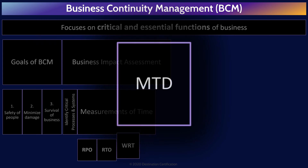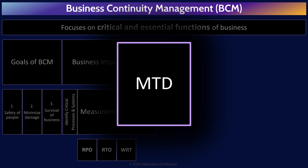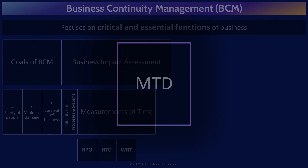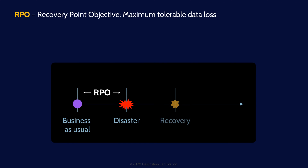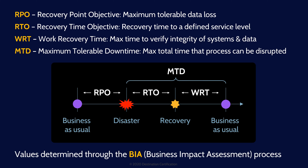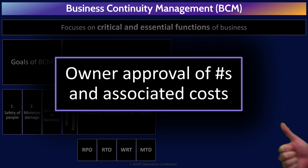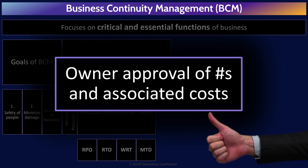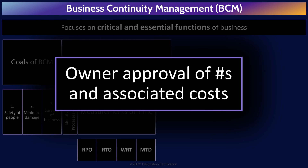And the maximum tolerable downtime, the MTD — also sometimes referred to as the maximum allowable downtime, MAD — is the maximum time a critical process or system can be disrupted before there are unacceptable consequences to the business, like the business going out of business. The MTD is always going to be greater than or equal to RTO plus WRT. Here's a diagram that summarizes these numbers. This visual helps me remember how these numbers fit together — hopefully it does the same for you.